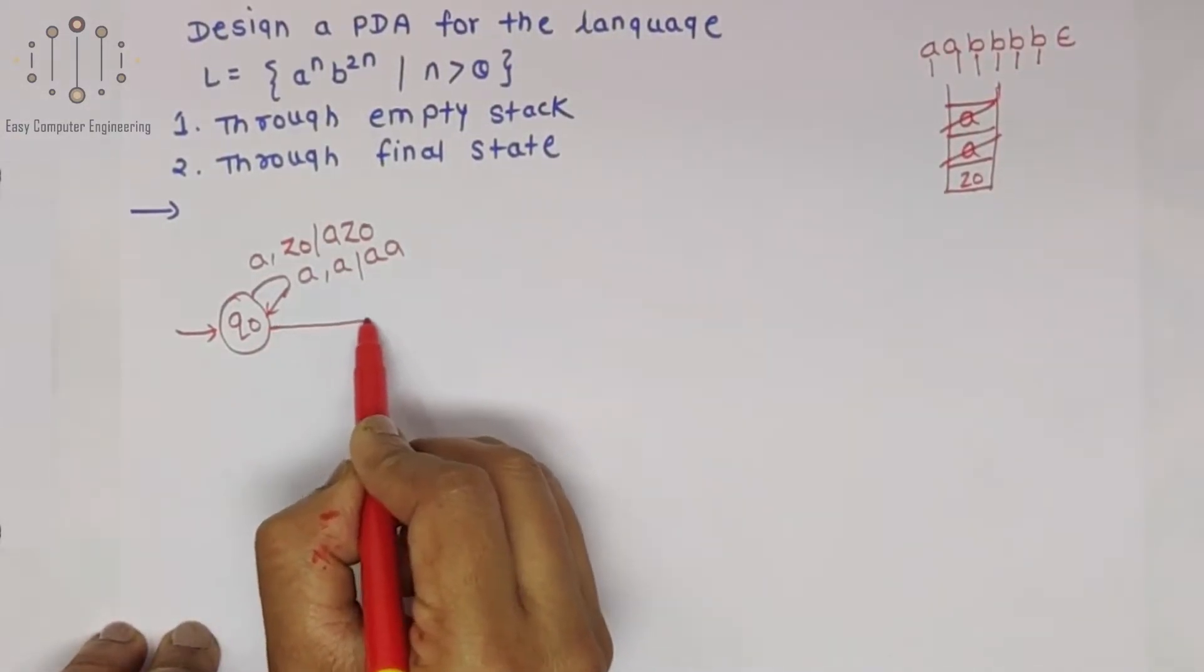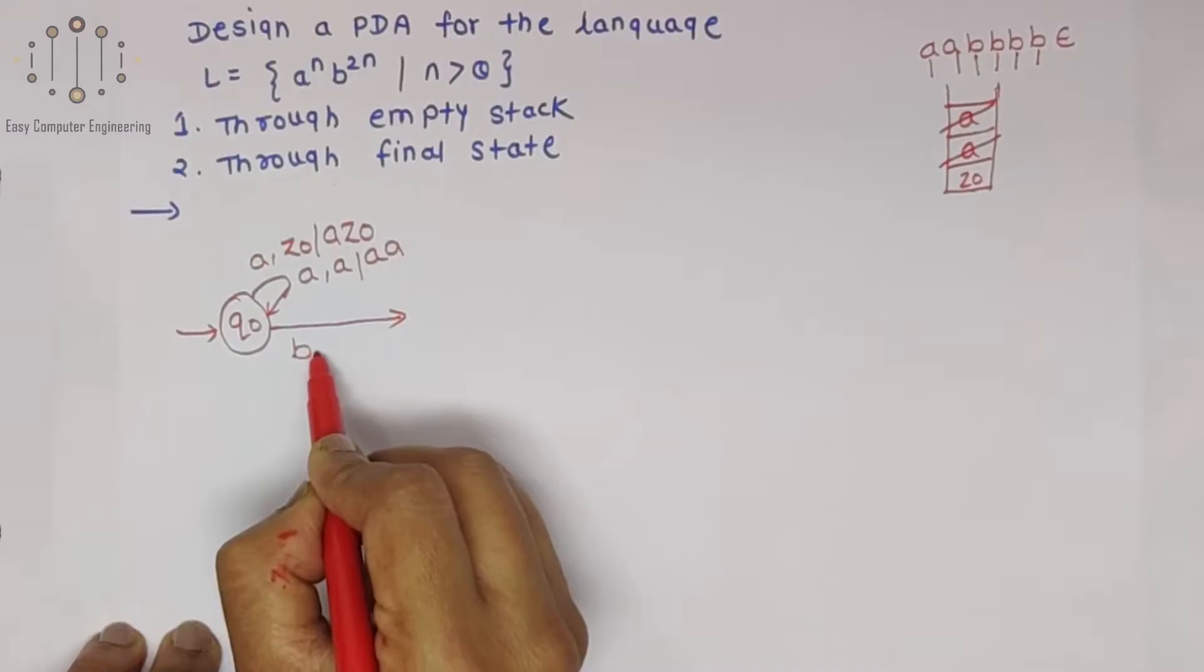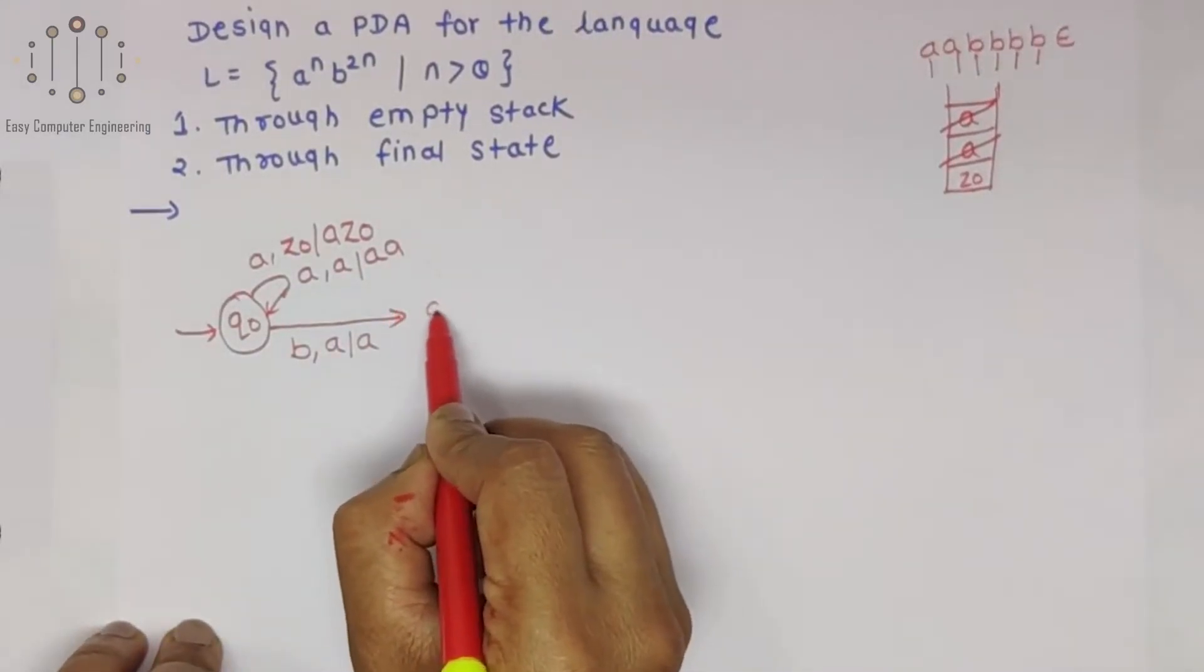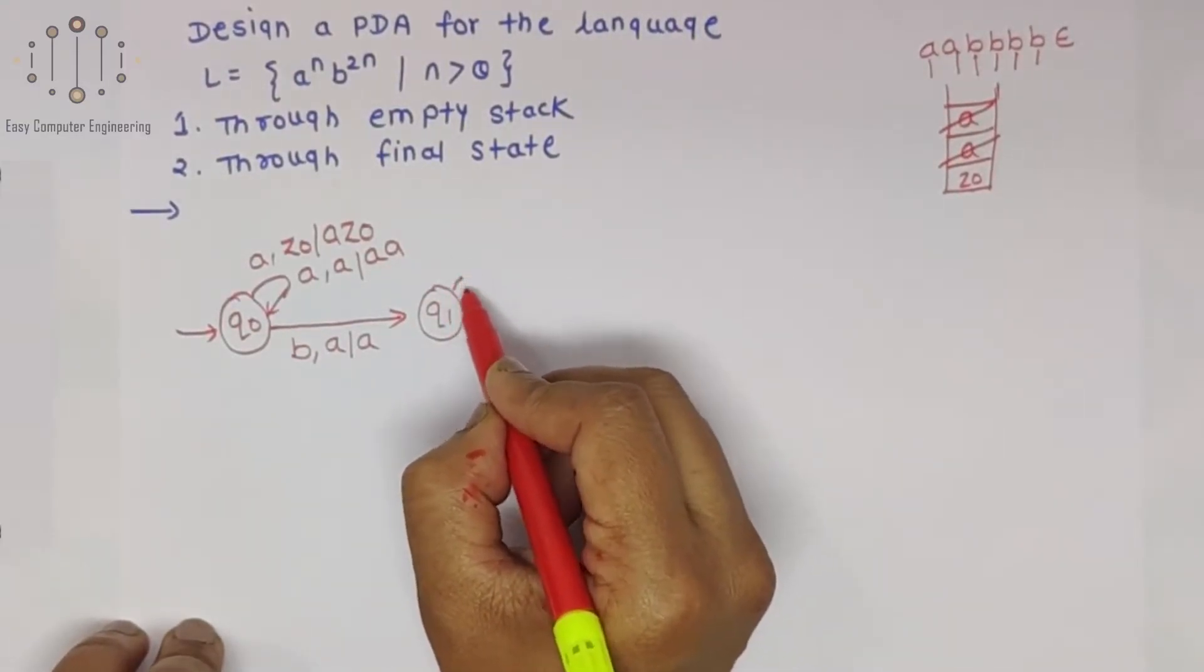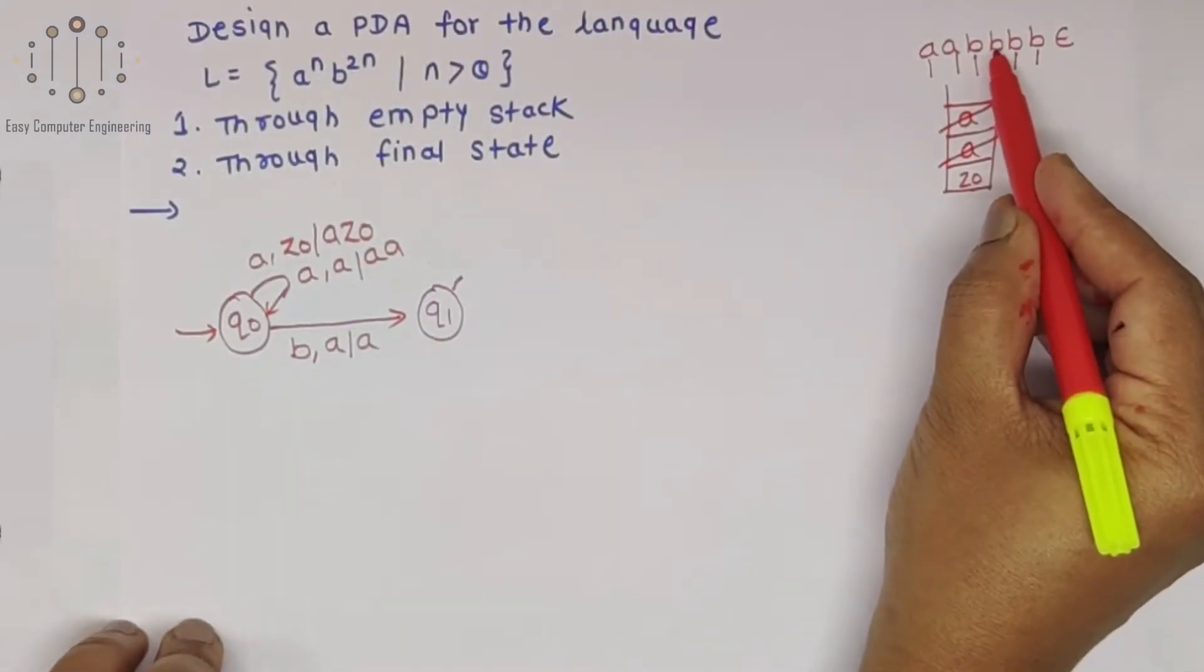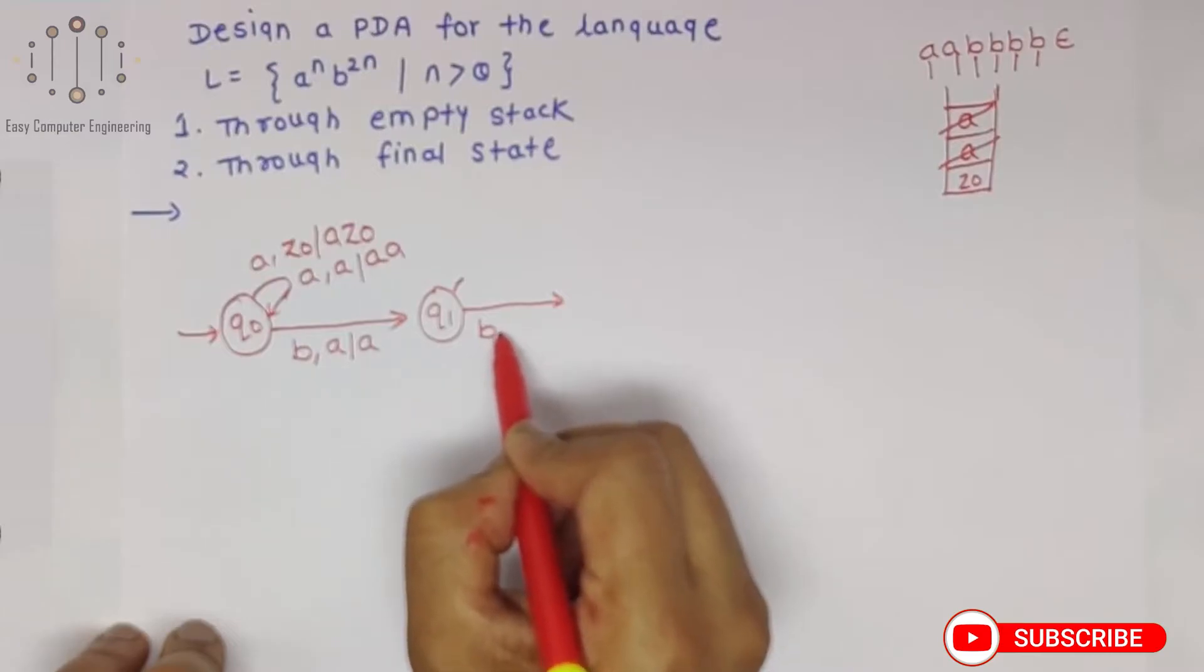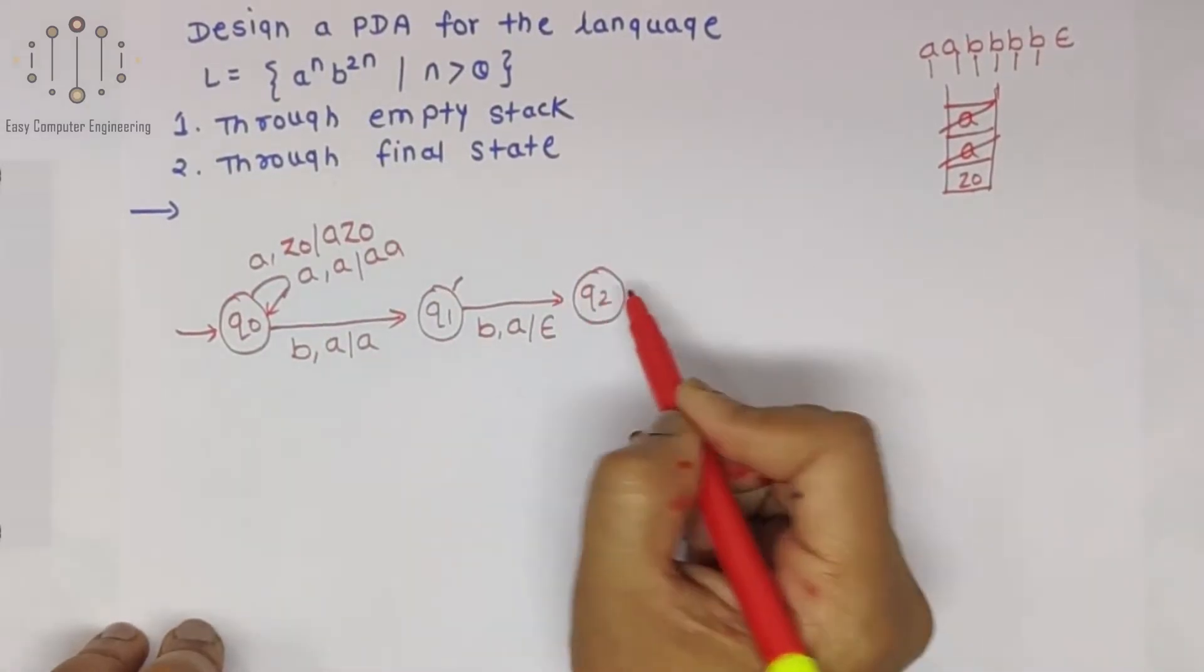After pushing A into the stack, for my first B letter, just read this B. In stack A is present, keep that A as it is and change the state. Now here I am at Q1. From B we are going to pop A for the second letter. Incoming symbol is B, in stack there is A, then pop it. I have changed the state to Q2.